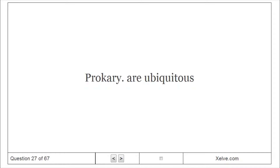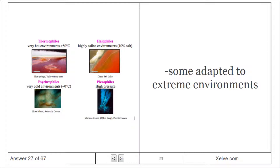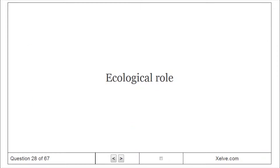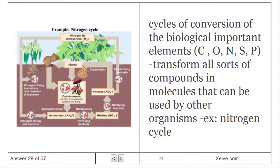Prokaryotes are ubiquitous and some are adapted to extreme environments. Their ecological role includes cycles of conversion of biologically important elements C, O, N, S, and P — transforming all sorts of compounds into molecules that can be used by other organisms, as in the nitrogen cycle.